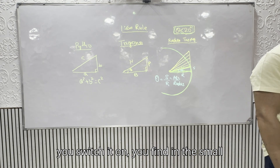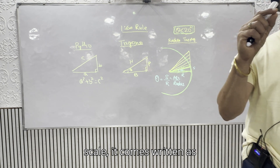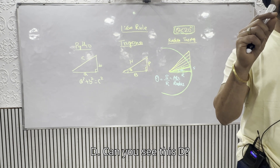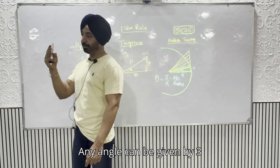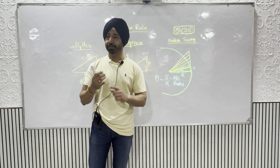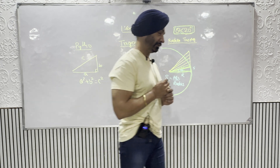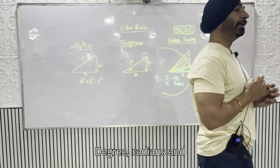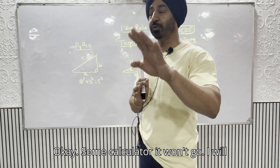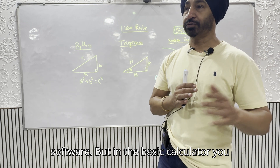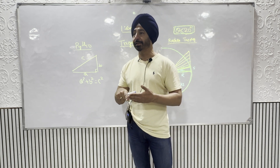Pick up your calculator. Switch it on — you'll find it shows 'D' for degrees. Press the mode button and you'll see degree, radians, and gradians — three different units for any angle. Any angle can be expressed in these three units.